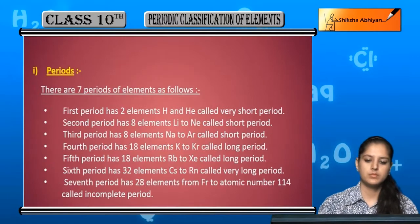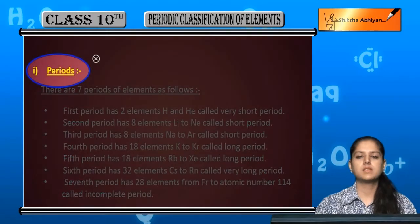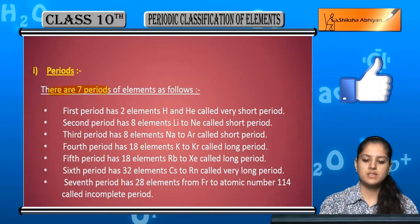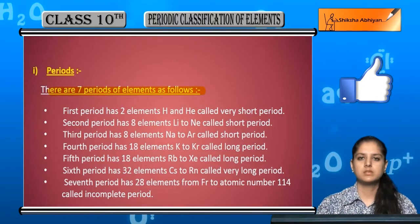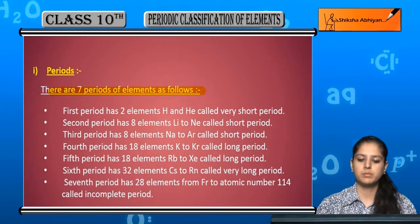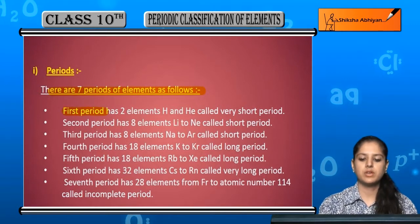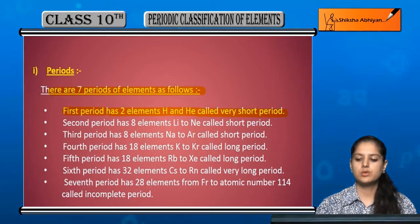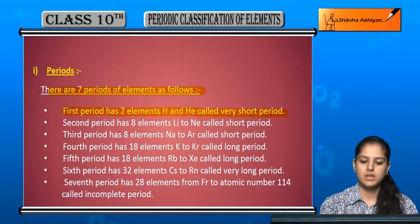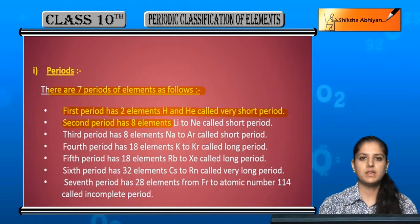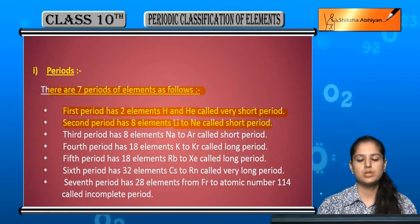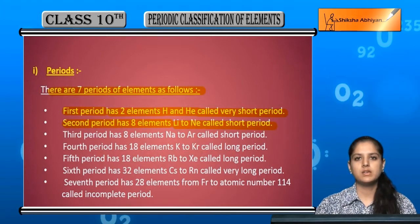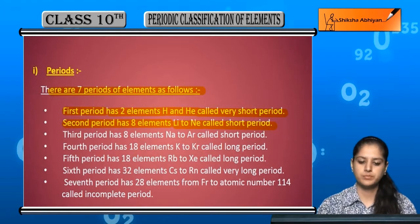The modern periodic table is divided into periods and groups. There are seven periods in total. The first period has two elements — hydrogen and helium — so it is called the very short period. The second period has eight elements, from lithium to neon, and is called the short period.